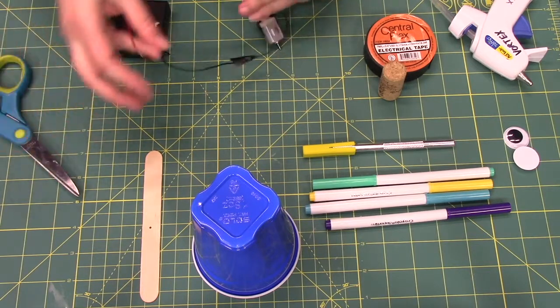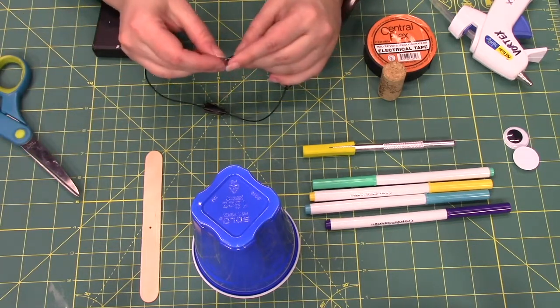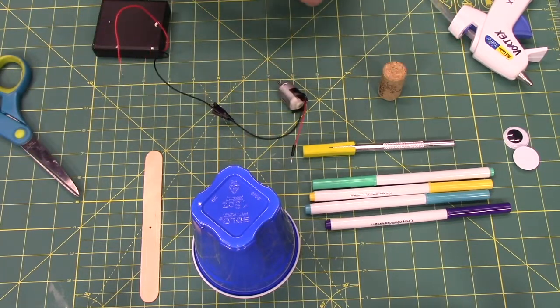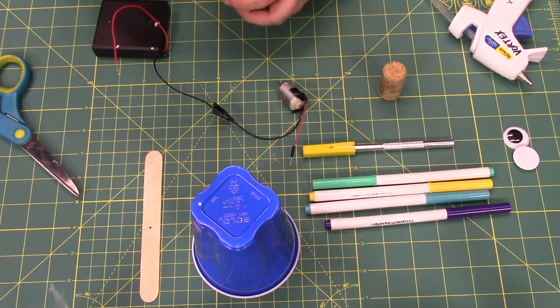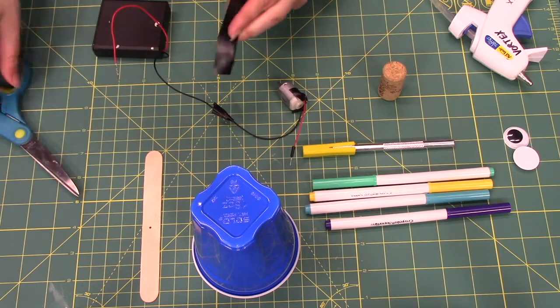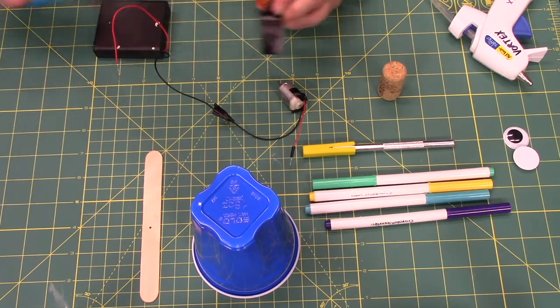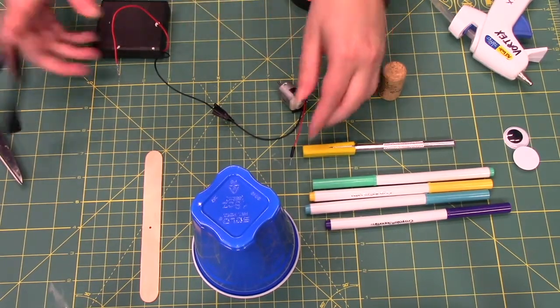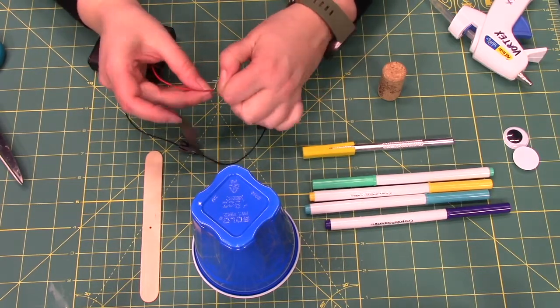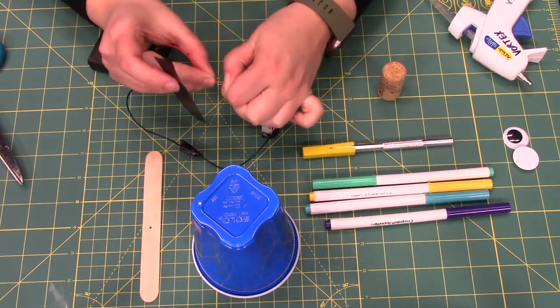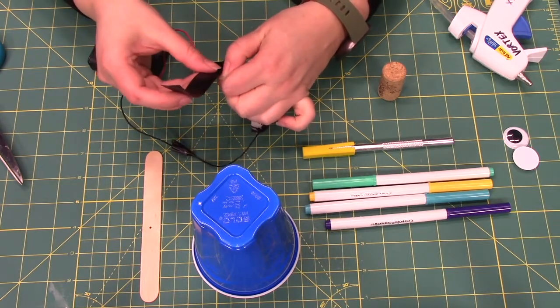It doesn't have to be pretty, it's going to be hidden inside the cup. So I'm going to go ahead and cut the tape first and I'm going to do the same thing. Wrap the lead around the wire and then tape it real quick.